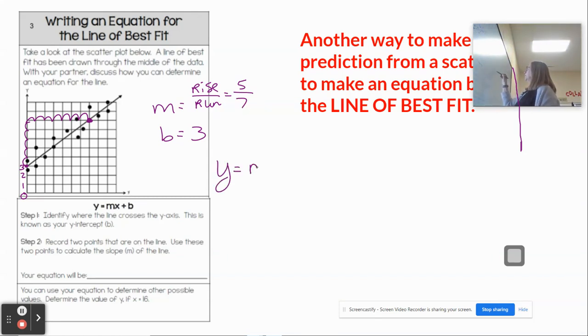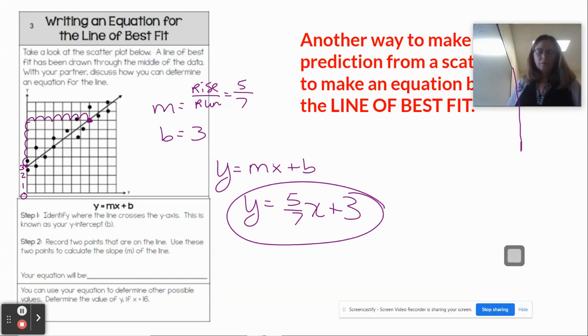So when I put it all together, my equation would be y equals 5 sevenths x plus 3. So I can form an equation based on the line of best fit, not based on those black points that are there, just based on the line of best fit.